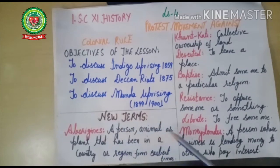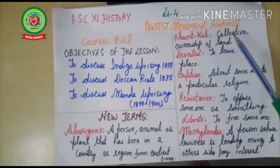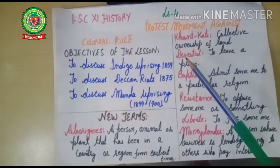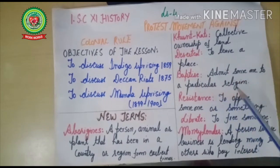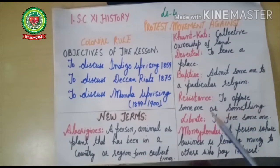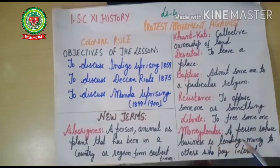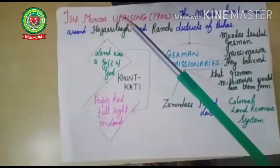The new terms are: Aborigines — a person, animal, or plant that has been in a country or region from earliest times; Kundkati — collective ownership of land; Deserted — to leave a place; Baptize — to admit someone to a particular religion; Resistance — to oppose someone or something; Liberate — to free someone; Money lender — a person whose business is lending money to others who pay him interest.